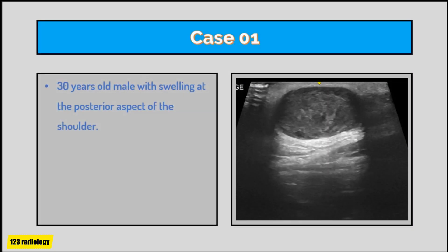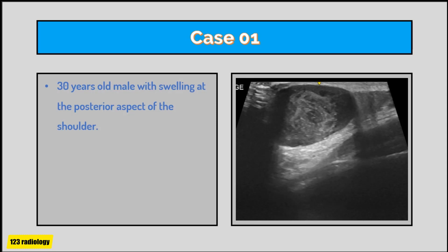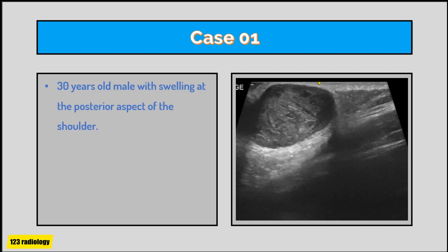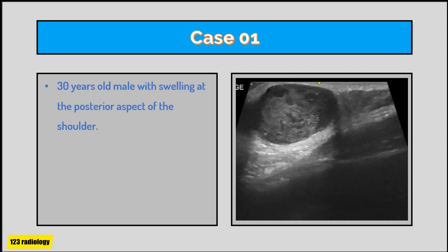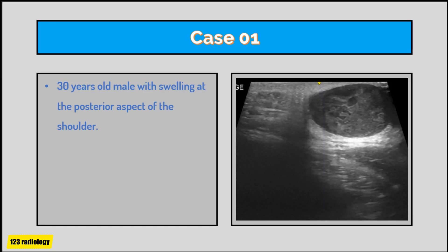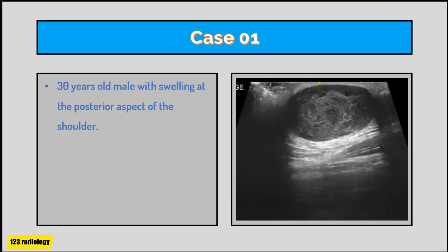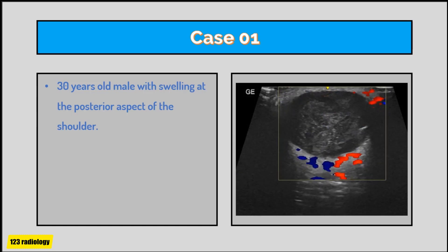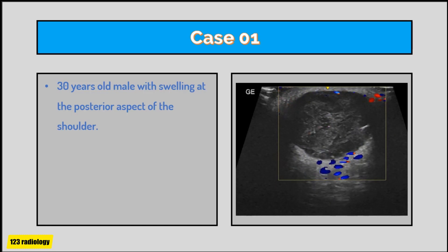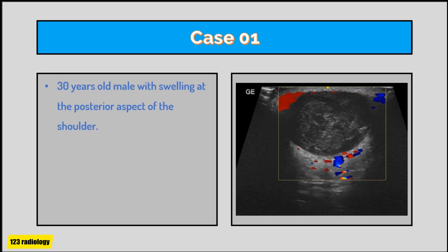Case number one: a 30-year-old male with swelling at the posterior aspect of the shoulder. As seen in this cine clip, there is a hypoechoic oval-shaped lesion with dermal attachment and subcutaneous location. The lesion shows heterogeneous echo texture with well-defined margins and posterior acoustic enhancement. On color Doppler examination there is no internal flow. These ultrasound features are highly suggestive of epidermal inclusion cyst, and the diagnosis was confirmed by histopathology.